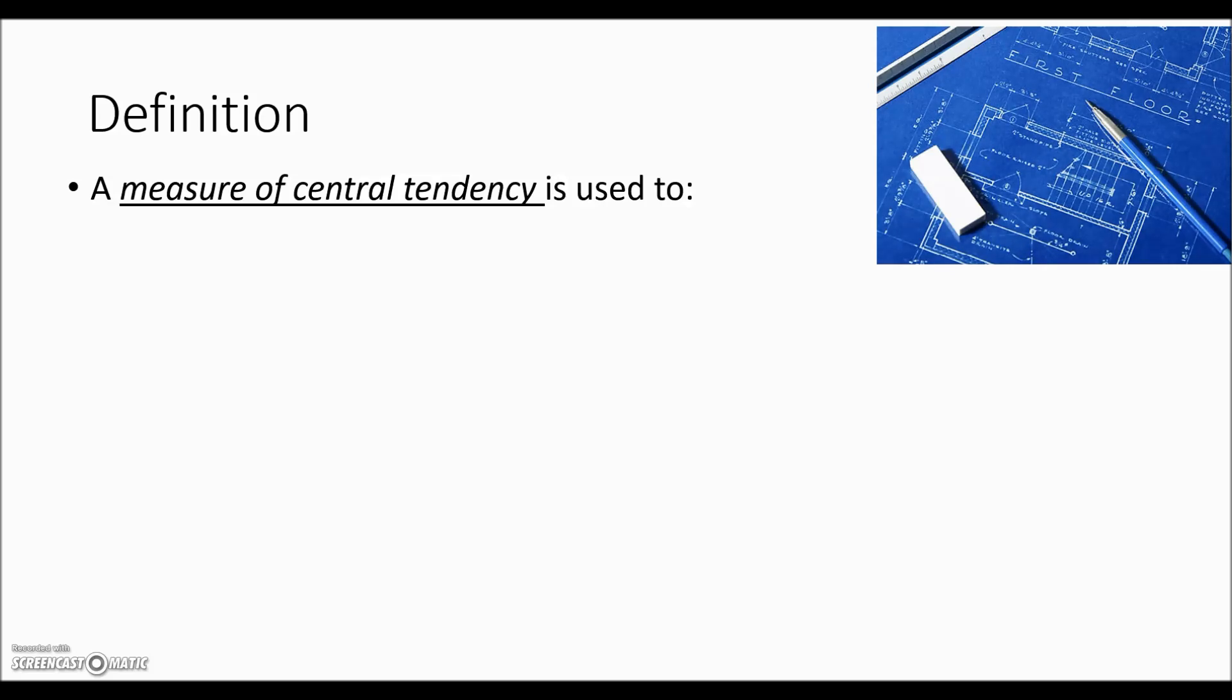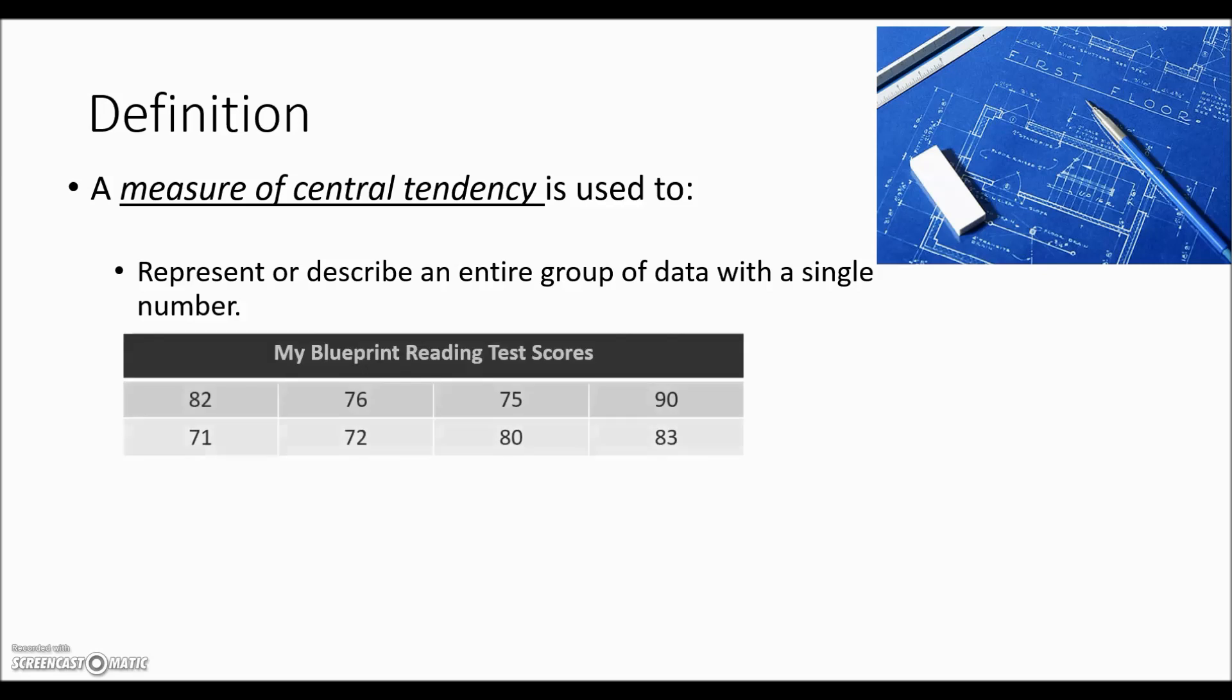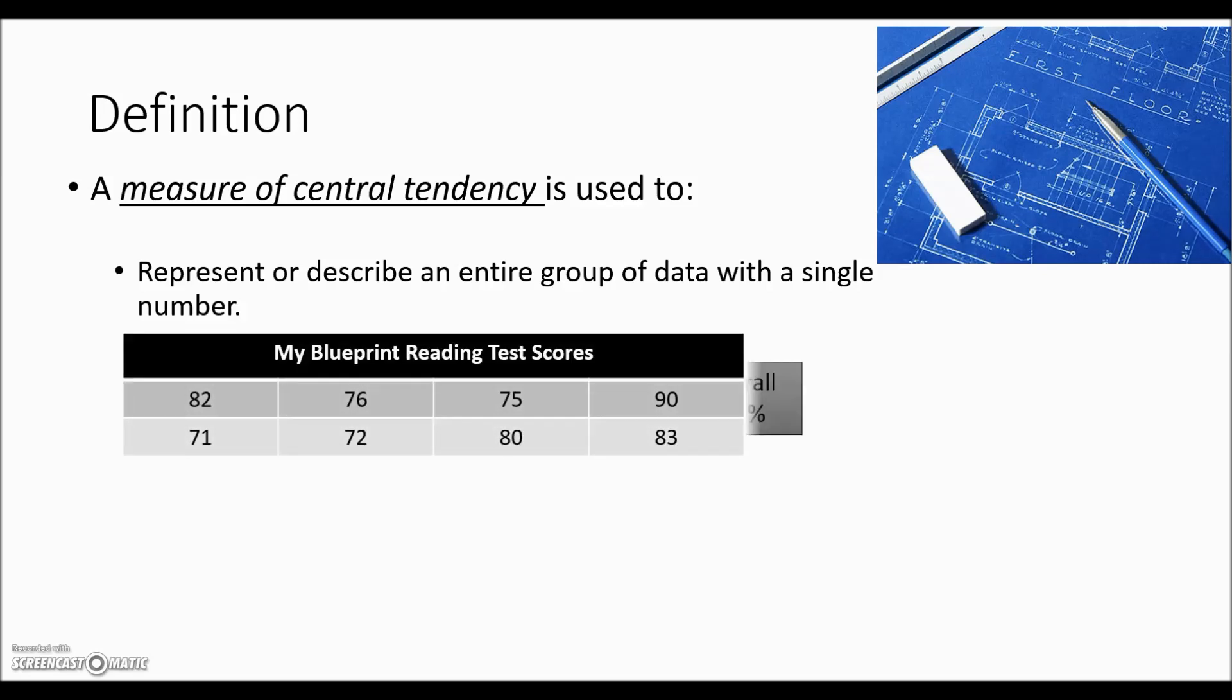The definition for the measure of central tendency is that it is a number that best describes a group of data. Here we have an example of test scores from a blueprint reading class and this single number, an overall average of 79%, is a measure of central tendency, a single number representing a group of data.